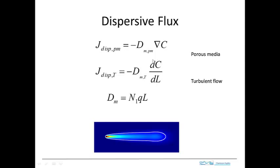If it's largely in one dimension — just flowing in 1D — then we have turbulent dispersion, and it also has this same form: a flux driven by a concentration gradient. The proportionality constants are essentially equivalent in form. So we have the same kind of equation for both cases, though the dispersion constant will be different for porous media versus turbulent flow.